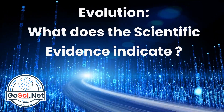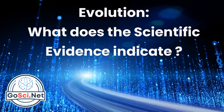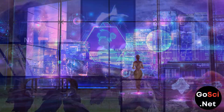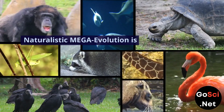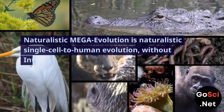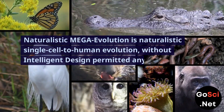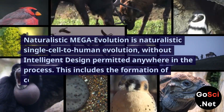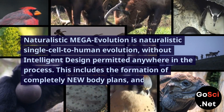Evolution. What does the scientific evidence indicate? Definitions. Naturalistic mega-evolution is naturalistic single-cell to human evolution without intelligent design permitted anywhere in the process.